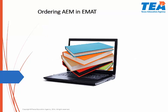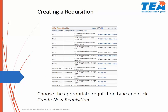Ordering AEM in EMAT: In order to create a requisition to order accessible instructional materials, go to the District Start page. In the AEM requisition list, choose the appropriate requisition type, such as Braille or Large Print, and click Create New Requisition. Annual requisition simply means that it is the first requisition of the school year. Supplemental requisition means any other requisitions you may make to order additional materials. Audio LD means audio materials for a student with a learning disability, such as dyslexia. Audio VI means that you are ordering for a student with a visual impairment of some sort.